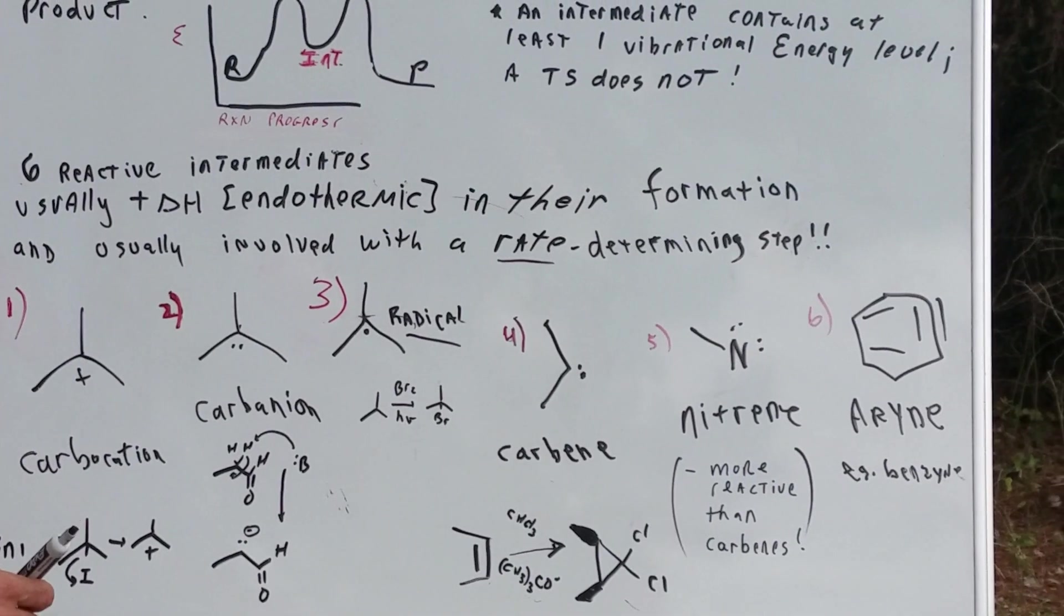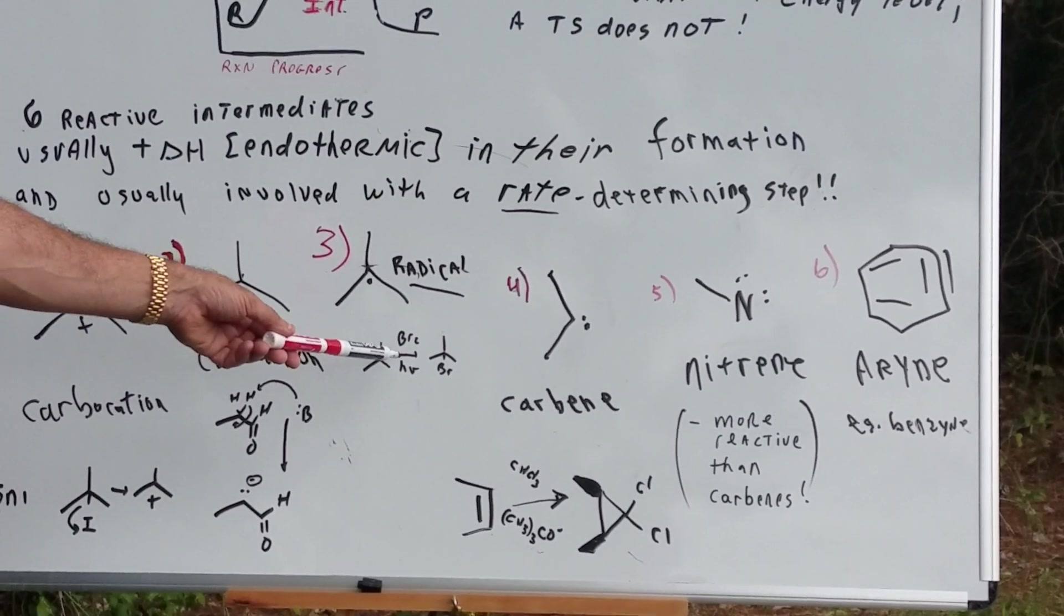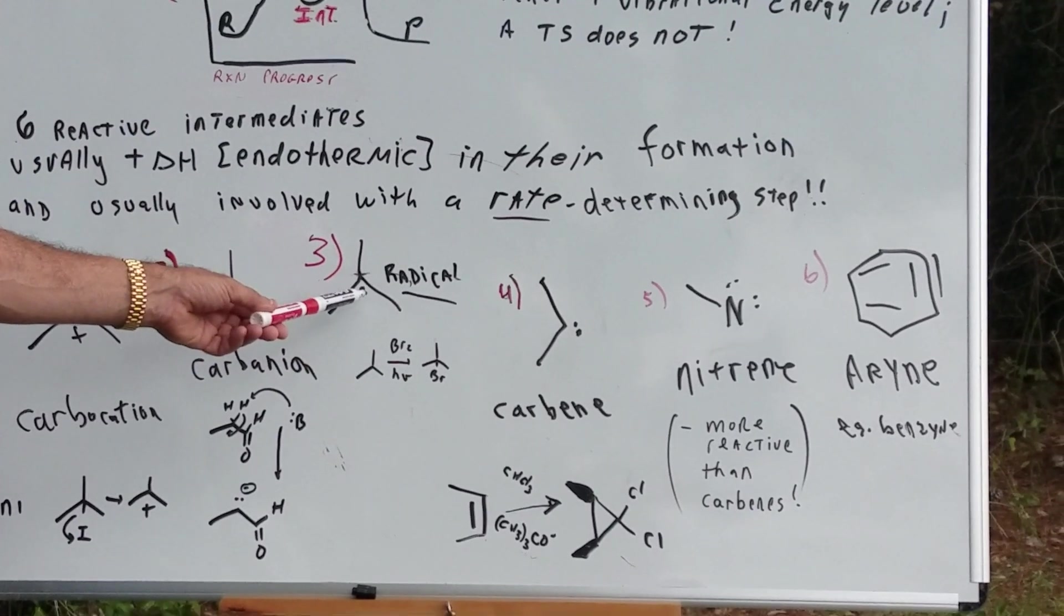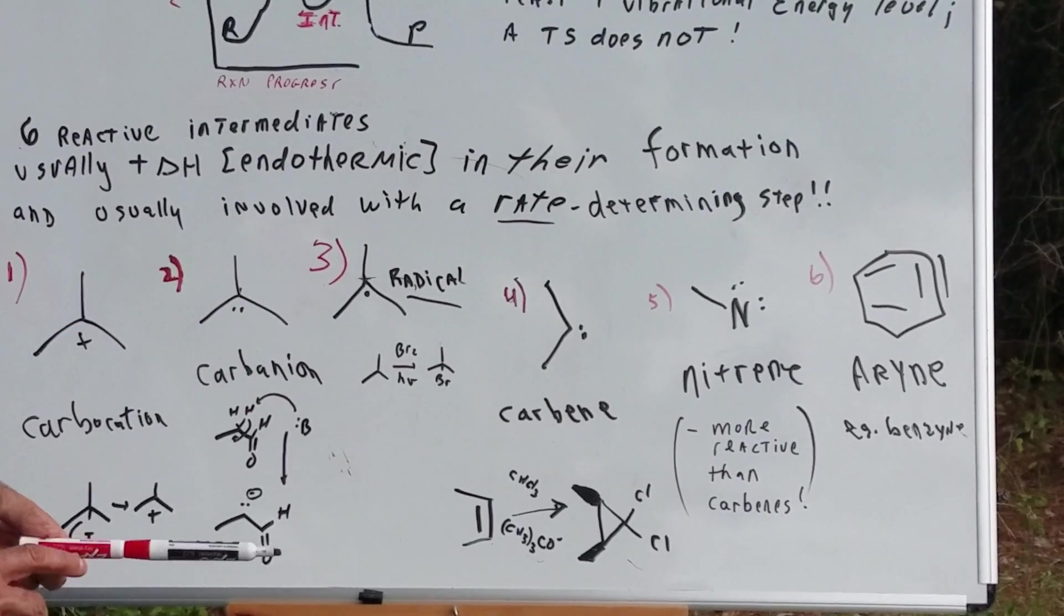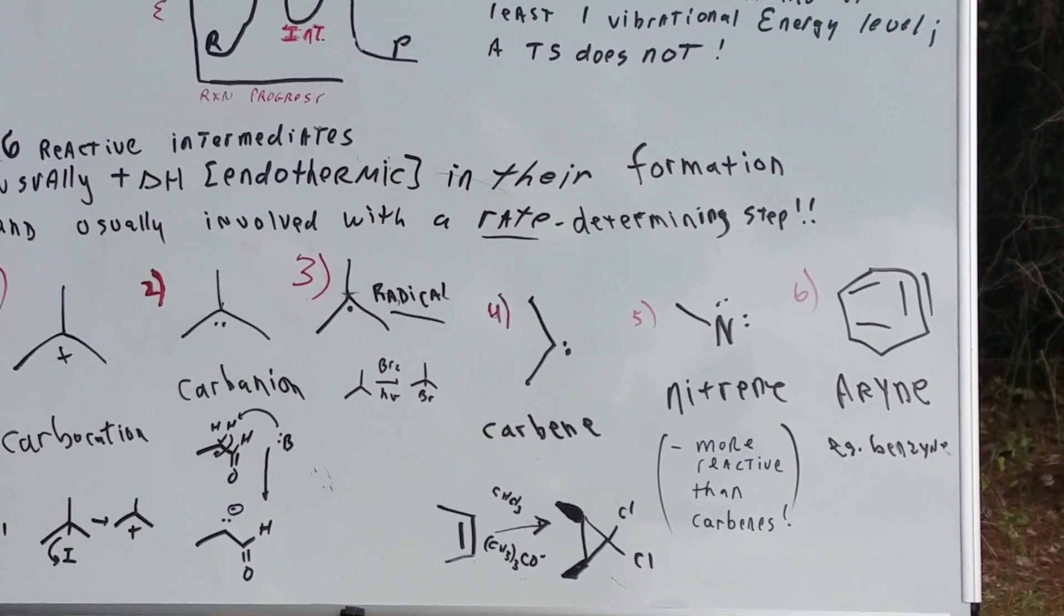This one is another commonly asked one. It's a radical or a free radical. For example, bromine in light, if you all remembered, would be able to add to a molecule. And this reaction where we put a bromine would involve a radical.